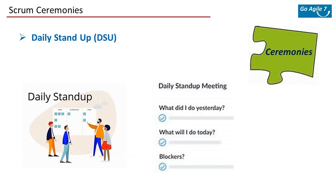Daily stand-ups should not run for 30–40 minutes or an hour — that's not effective. Once you get used to Scrum ways, you should not need more than 15 minutes. If there are pointed discussions about an impediment, have an offline meeting after the daily stand-up rather than engaging all members. Teams should have the self-discipline to join these meetings on time. There's a wrong notion that the Scrum Master has to start the DSU every day — whether the Scrum Master is there or not, the team should be responsible enough to start it at the right time.